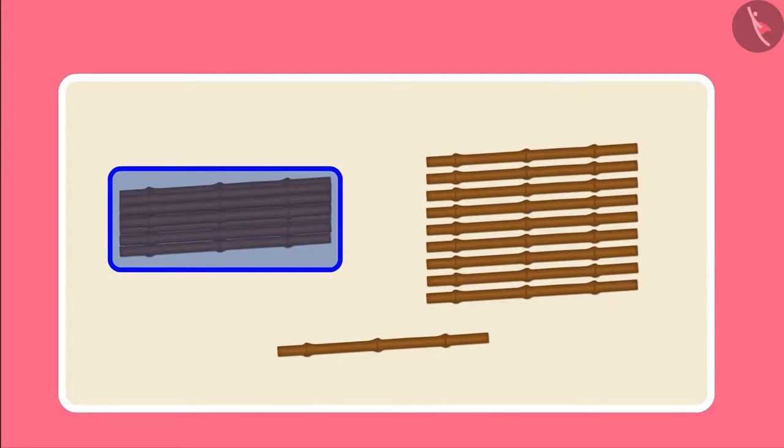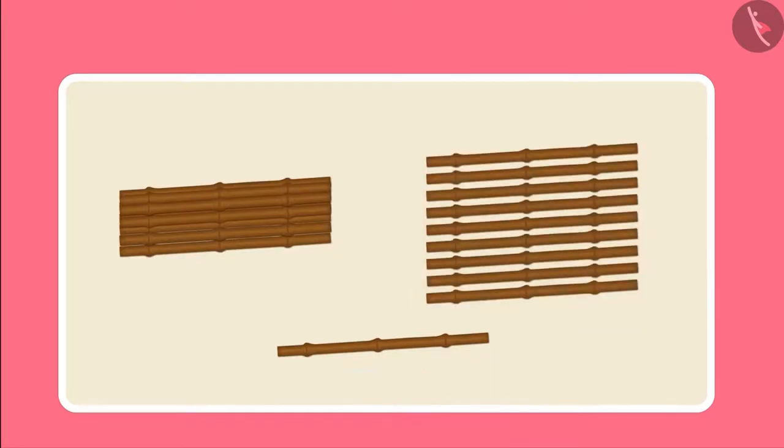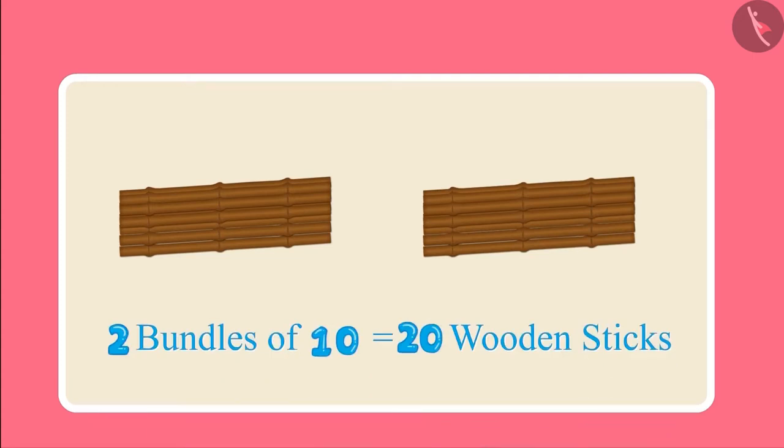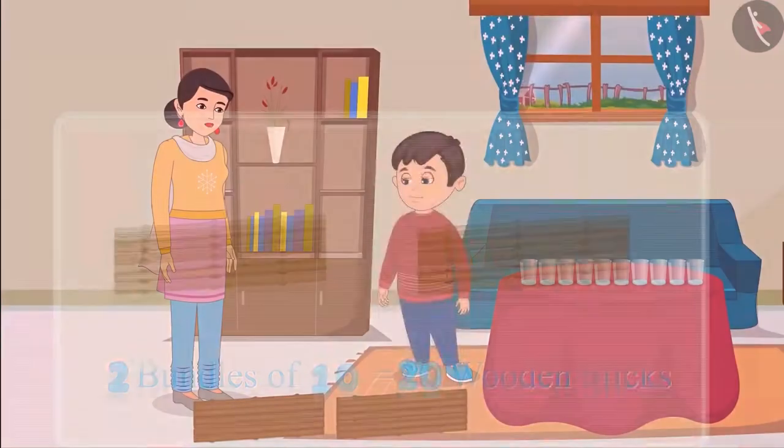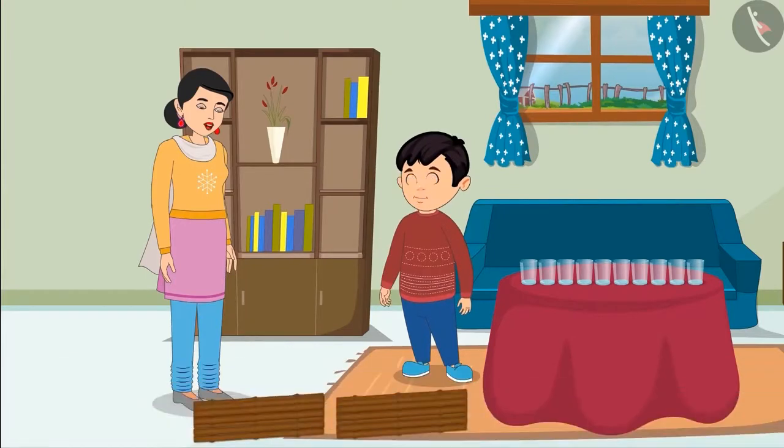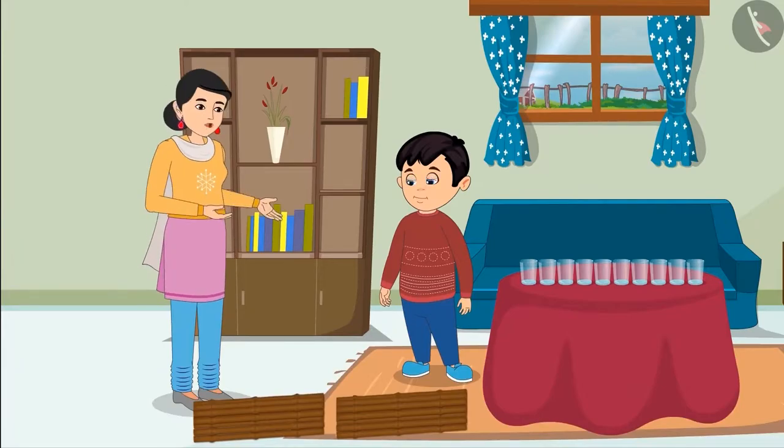So Chotu, as soon as we have 10 objects we make their bundle and count open objects till 9. As soon as we get another wooden stick after 19 we make another bundle of 10, which gives us 2 bundles of 10. That means I got 20 wooden sticks. Yes Chotu, you are absolutely correct. Now go and wash your hands.